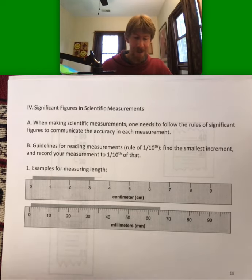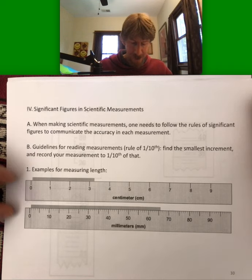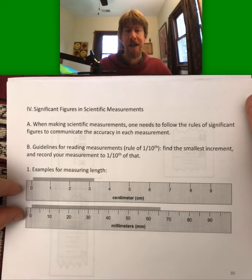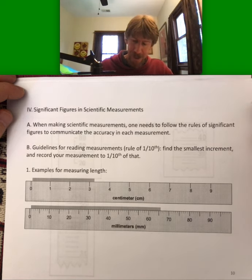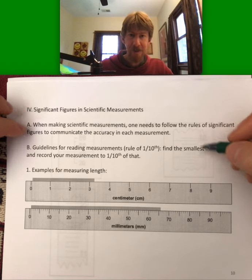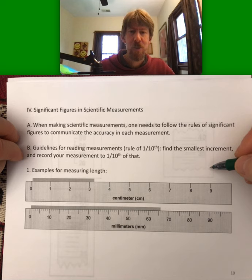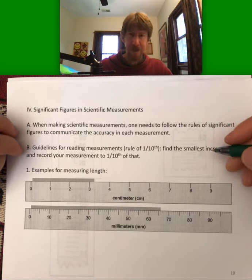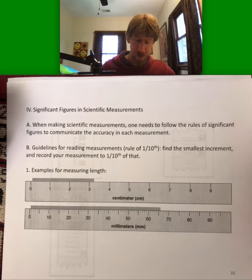Another video. And so now let's talk about how to use something like a ruler to do scientific measurements and use sig figs. So you need to communicate your accuracy and you need to use the rule of one-tenth. Find the smallest increment and record your measurement to one-tenth of that. That's the rule.